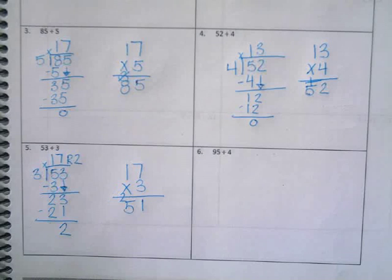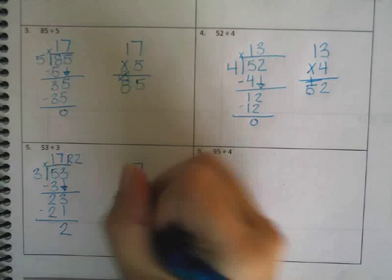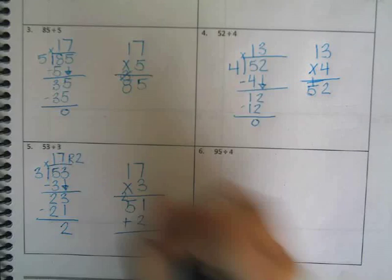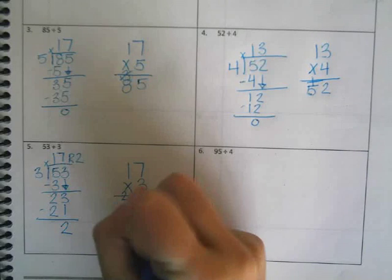Alright, am I done? No. What do I have to add? Your remainder. Josie? 51 plus 2. Yep, I have to add my remainder. So, 51 plus 2. Which gives me an answer of? 53.